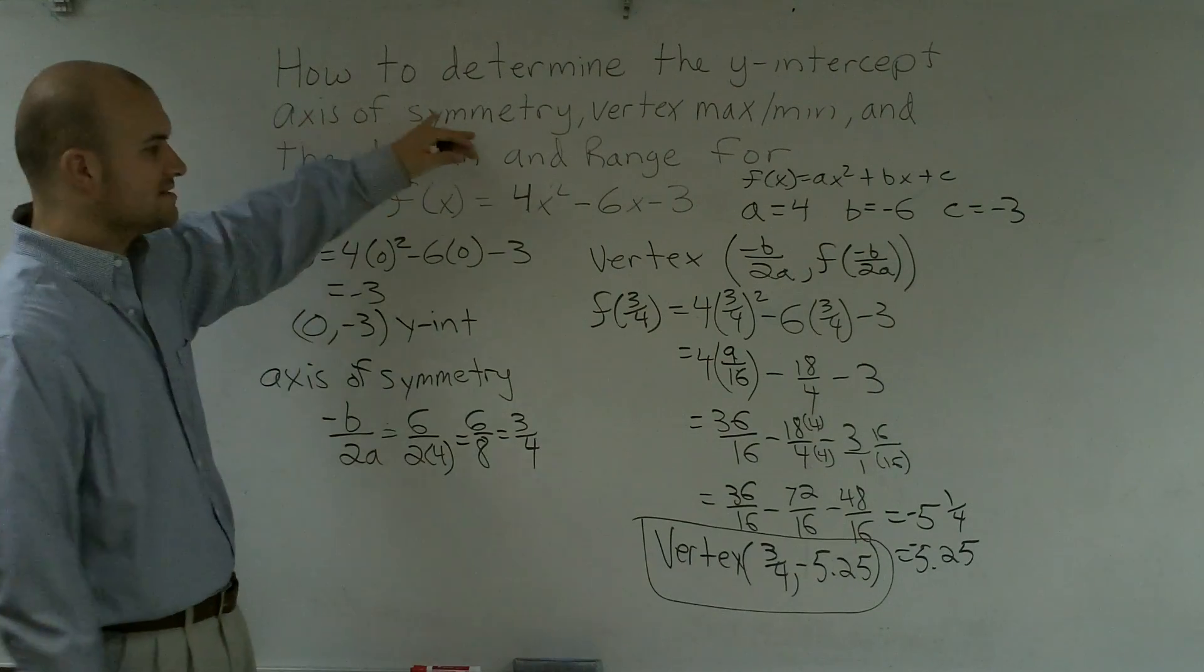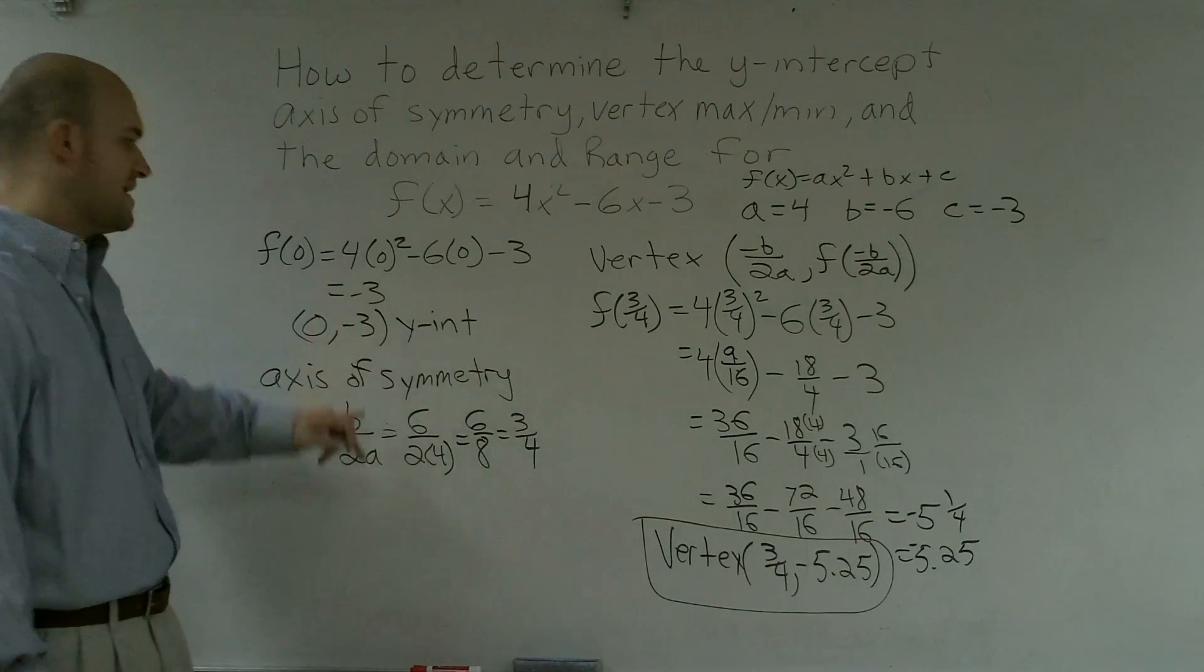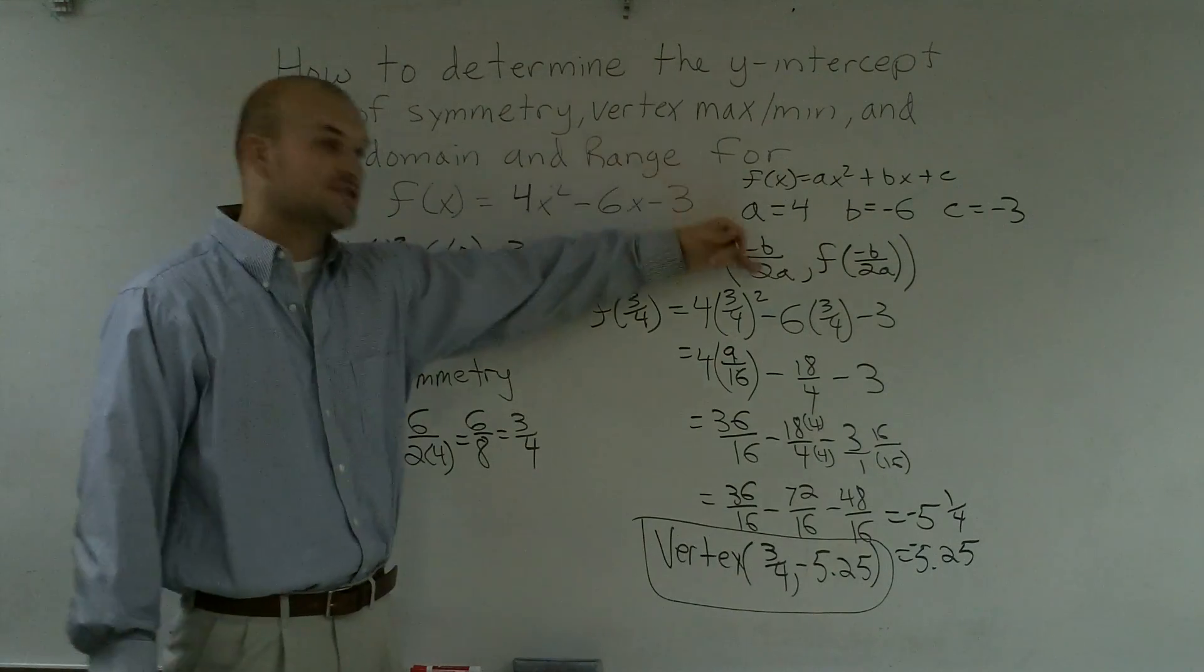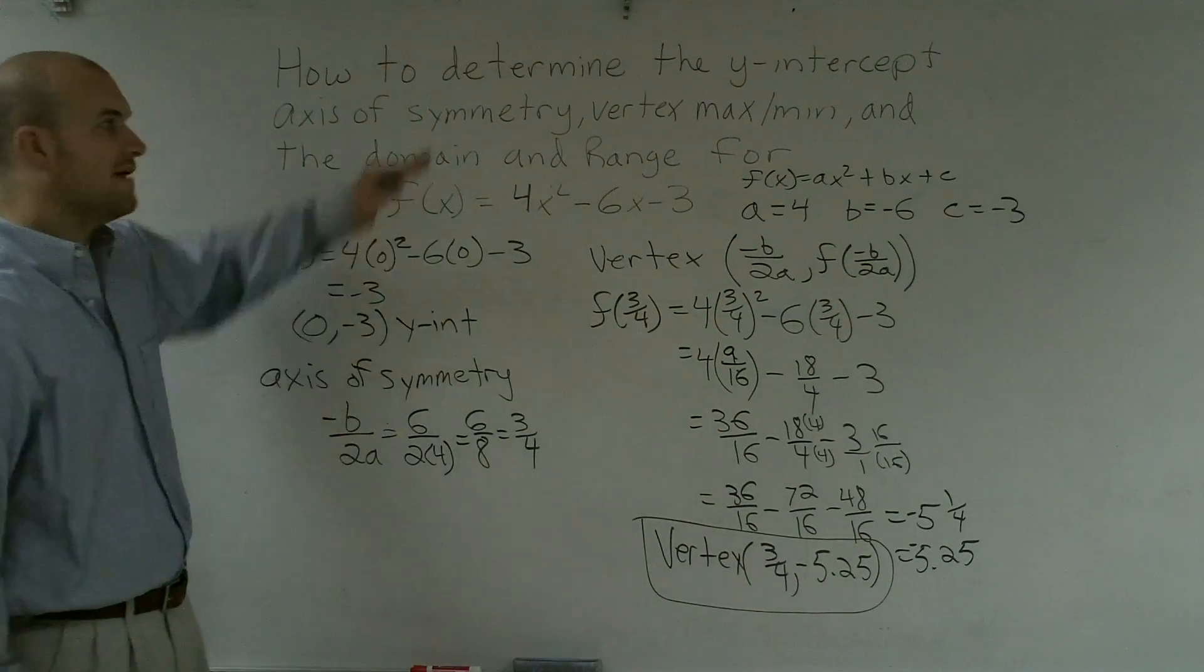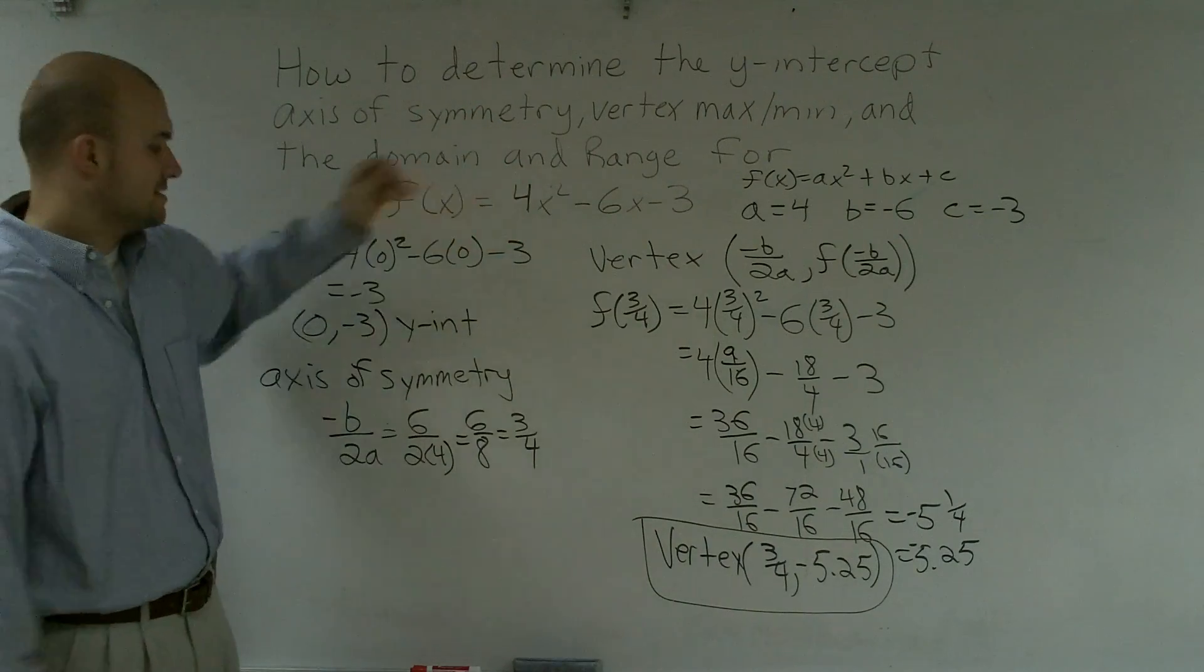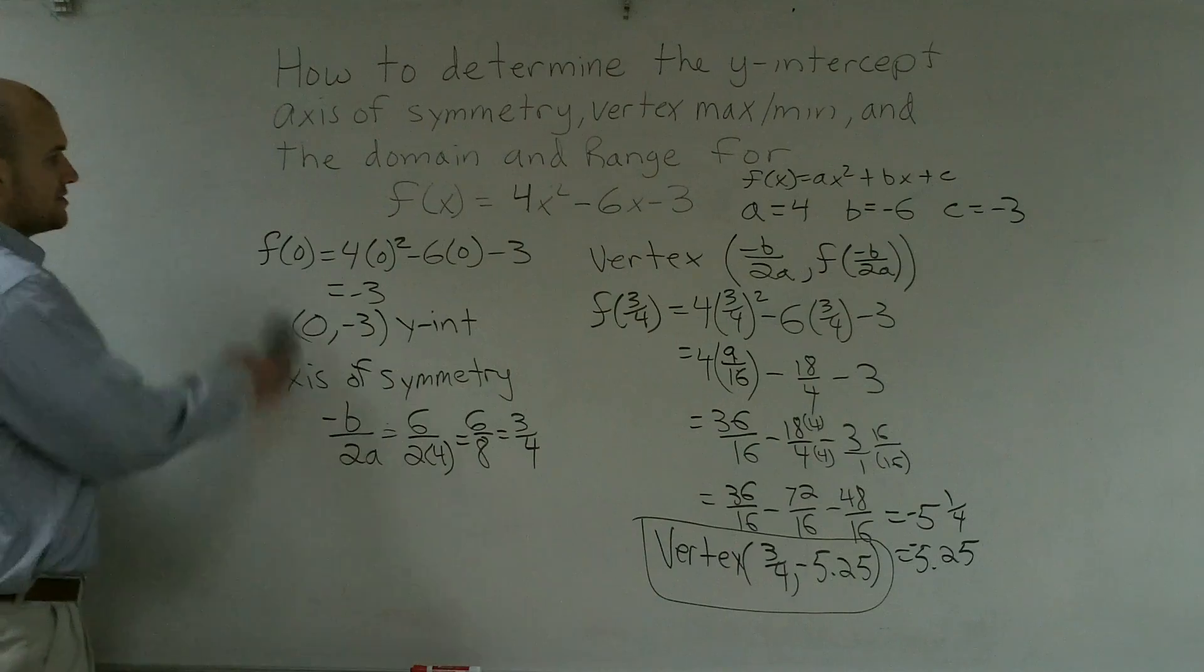So now you've found the axis of symmetry, which is very basic, just this formula. The vertex is you find the axis of symmetry and then plug it into your equation to find the other point. We found the y-intercept, which is probably the easiest. And now the last thing is we need to determine, is that a maximum or a minimum, and what is the domain and range?